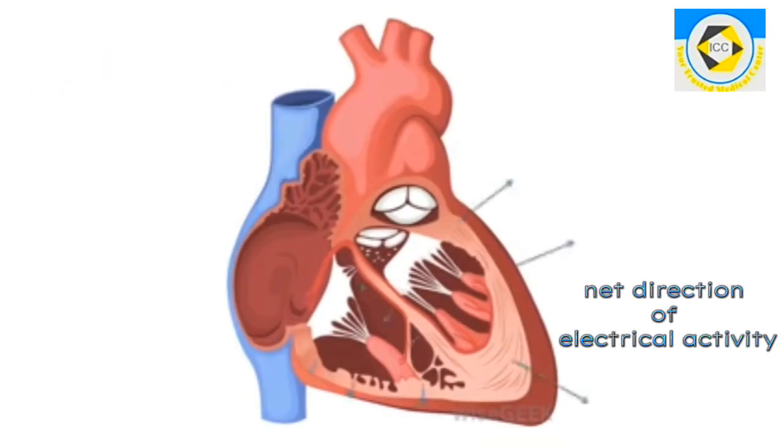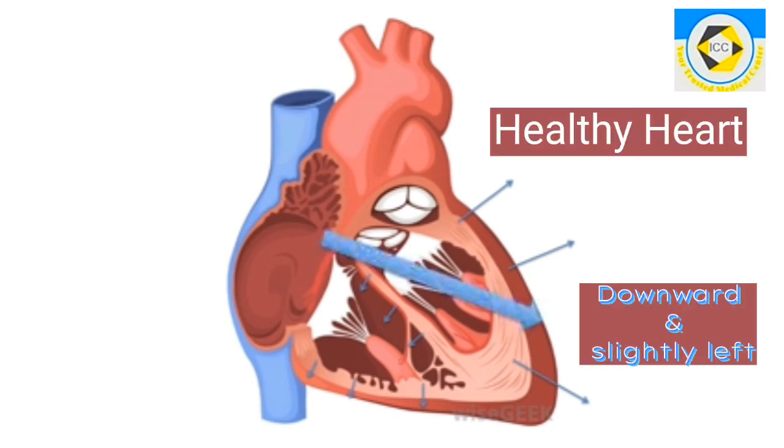Cardiac axis is the net direction of electric activity during depolarization. In a healthy heart, the net movement is downward and slightly left.